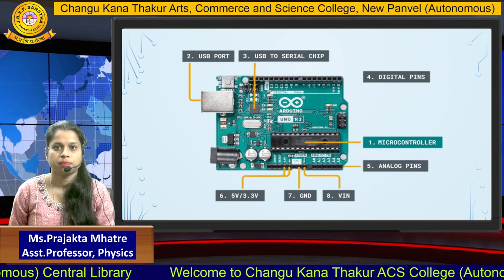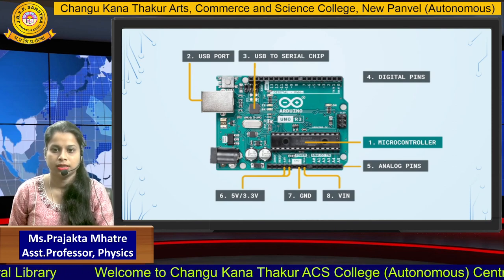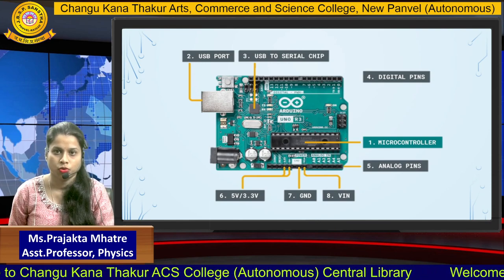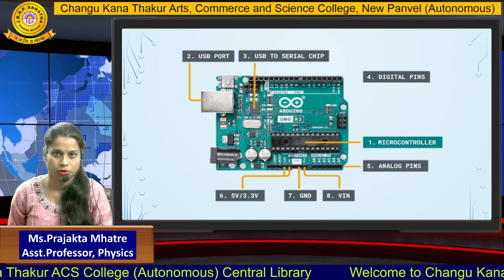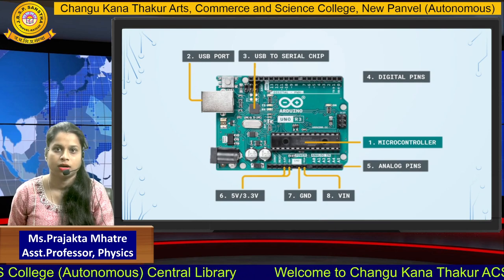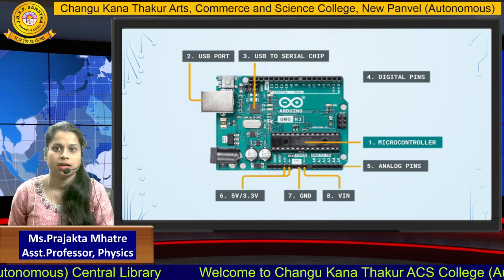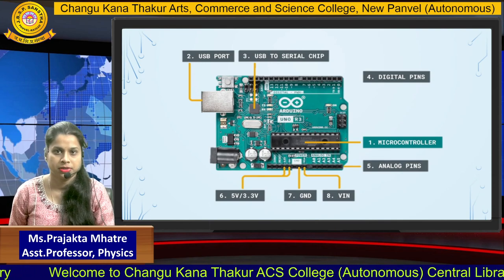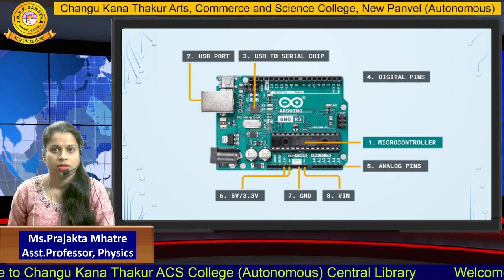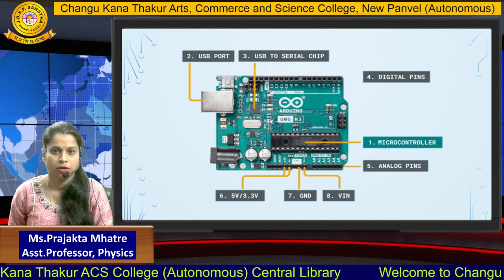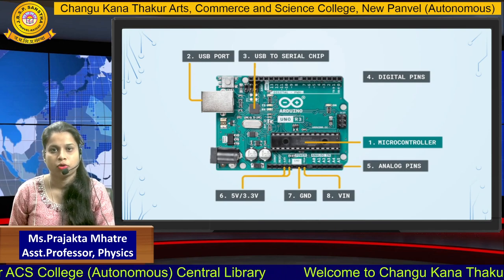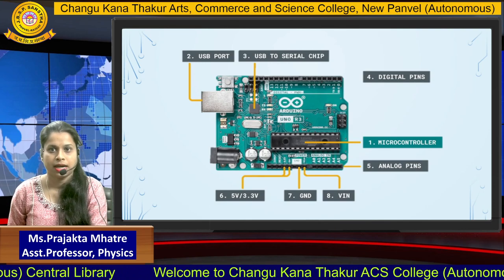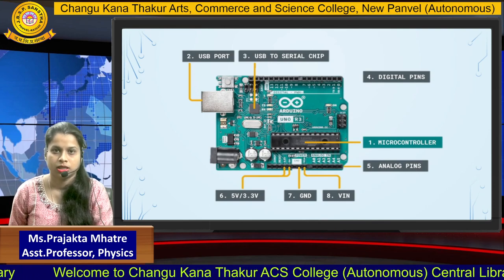The Arduino Uno is the cheapest and simplest programming board, which is also user-friendly. The Arduino Uno contains an ATmega328 microcontroller with 28 pins. Out of them, 14 are digital pins starting from D0 to D13. Six are PWM signals, and there are also three ground signals, one input signal, and two voltage sources at 5V and 3.3V.